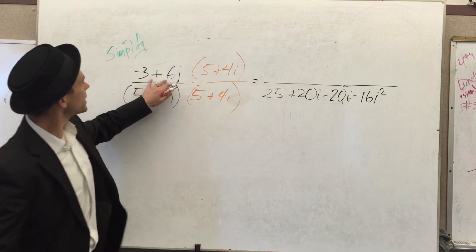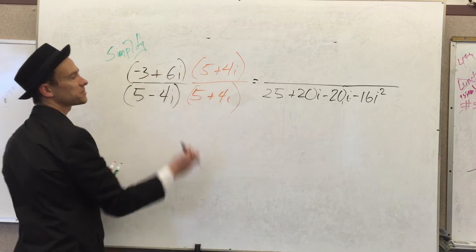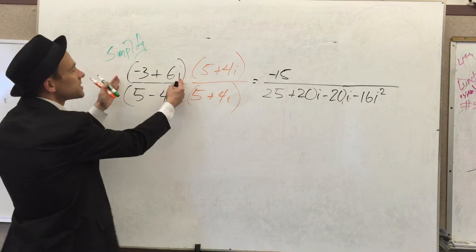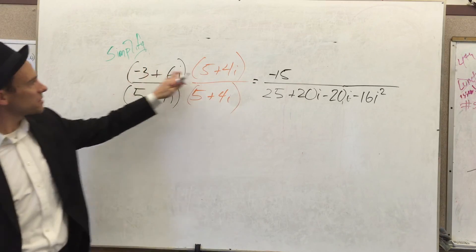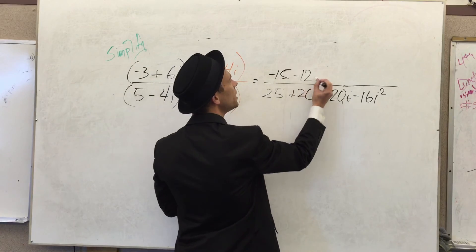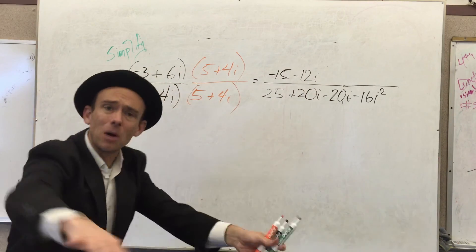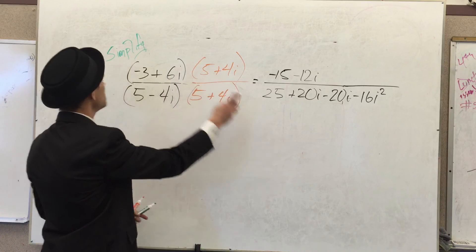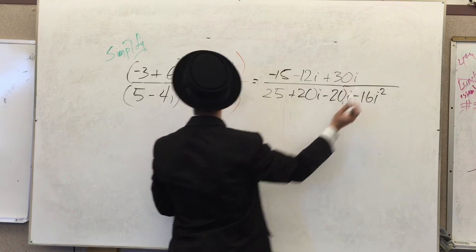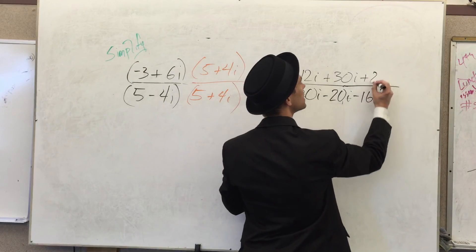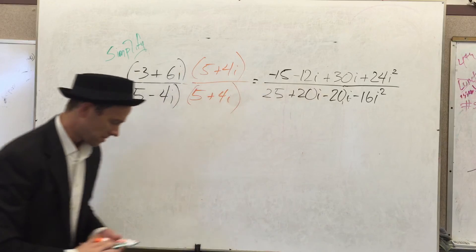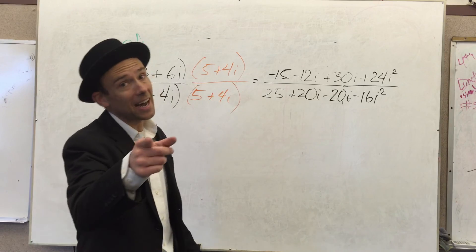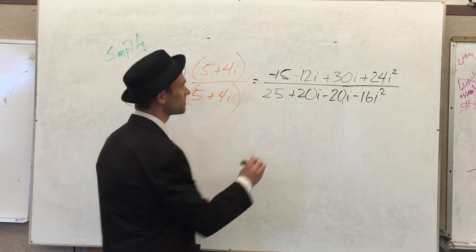To the numerator, we got negative 3 times 5 is negative 15. I just put the parentheses to help remind us that it's every—it's this entire numerator times this entire numerator. Negative 3 times 4 is negative 12i. Move on. Come on, stay with me. We almost there. I got 6i times 5 is plus 30i. And I got 6i times 4i is plus 24 i squared. Our basketball coach used to tell me there's no i in team. Oh, maybe not, but there is an i in a complex number. There's an i in algebra too.